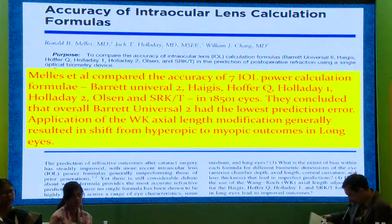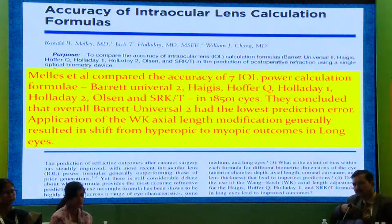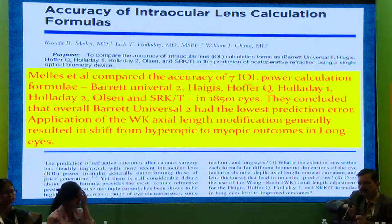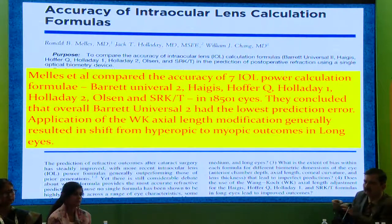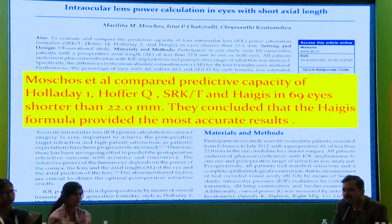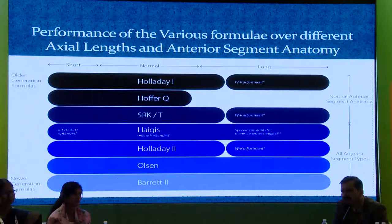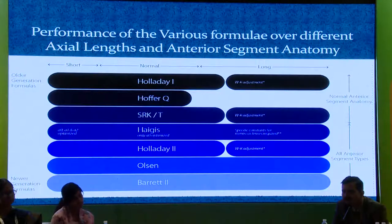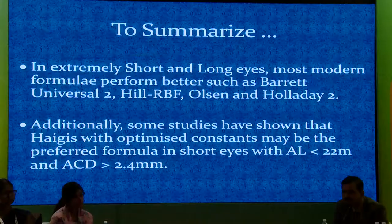Multiple studies have evaluated seven IOL formulas — Barrett Universal II, Haigis, Hoffer Q, Holladay 1, Holladay 2, Olsen, and SRK-T — in 1,800 eyes. It was concluded that overall, Barrett Universal II gives the best prediction across variations in axial length, with similar results from the Olsen formula. So in long and short eyes, Barrett and Olsen work best. There was also a comparison among Holladay 1, Hoffer Q, SRK-T, Haigis in 69 eyes, finding that Haigis also works reasonably well. Overall, the new-generation formulas — Olsen, Barrett Universal II, and Hill RBF — give the best results in short and long eyes.